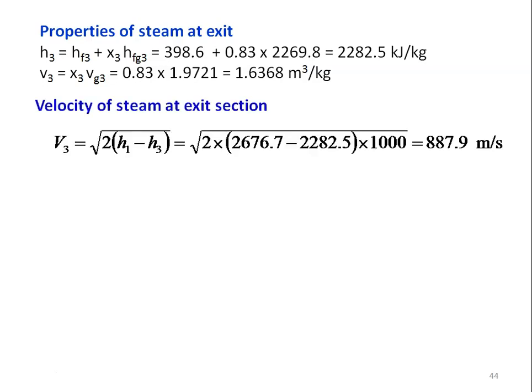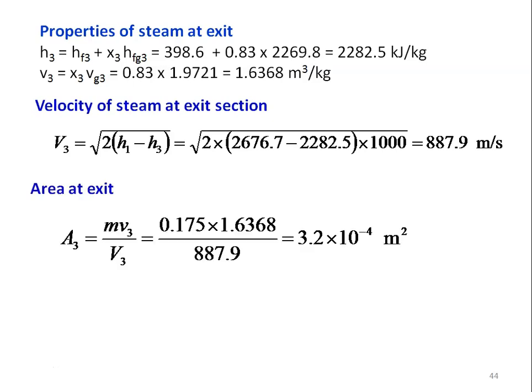Exit velocity: V3 = √(2 × (2676.7 − 2282.5) × 1000) = 887.9 m/s. Exit area: A3 = ṁ·v3 / V3 = 0.175 × 1.6368 / 887.9 = 3.2 × 10⁻⁴ m², which is 3.2 cm². That is the exit area of the nozzle.